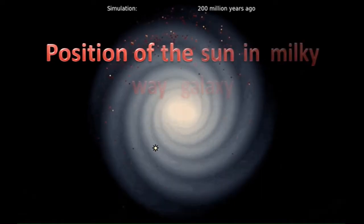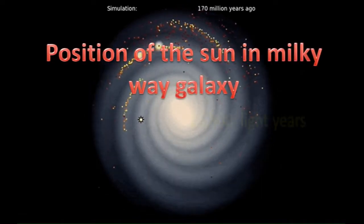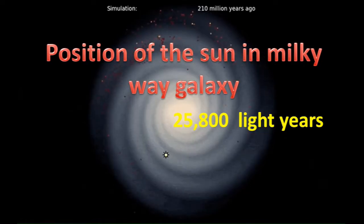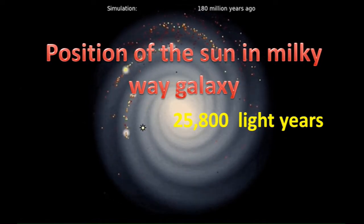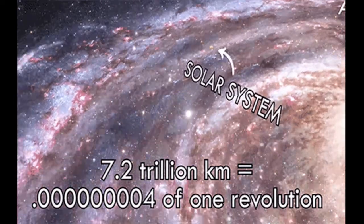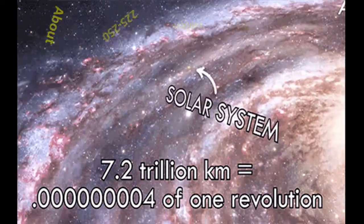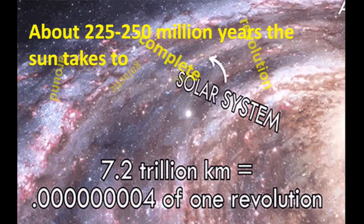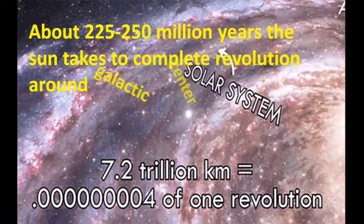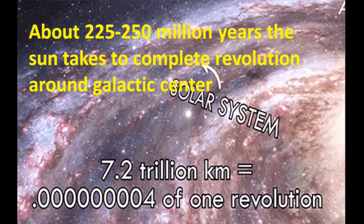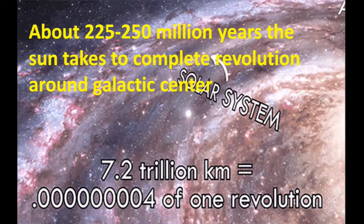Position of the Sun or solar system in Milky Way galaxy, about 25,800 light-years away from the galactic center. About 225 to 250 million years the sun takes to complete one revolution around the galactic center or central star of galaxy.